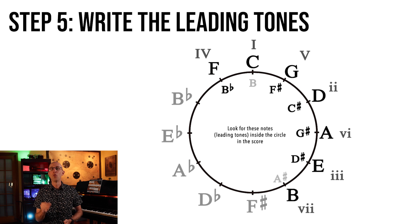And step 5: Write the leading tones for each diatonic note. The leading tone is a half step below the note. So the leading tone for C is B, the leading tone for G is F sharp, and the leading tone for D is C sharp.